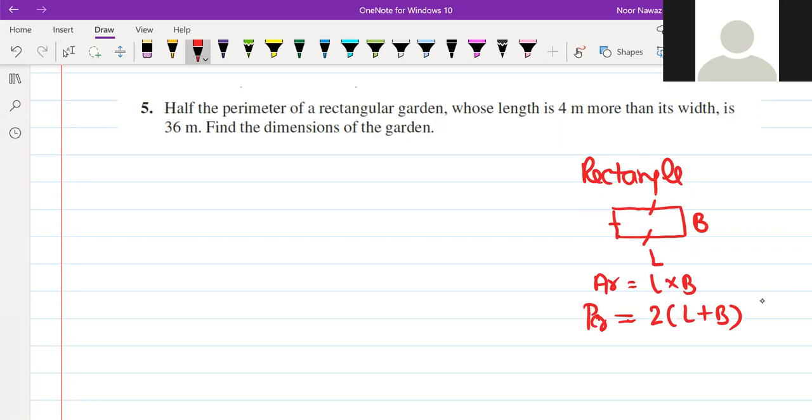What is half the perimeter? First of all, this is the information. Half the perimeter is 36 where length is 4 meter more than breadth. So if we consider it in two variables, then we can start from here. Let length be x, breadth be y. That's what we have.